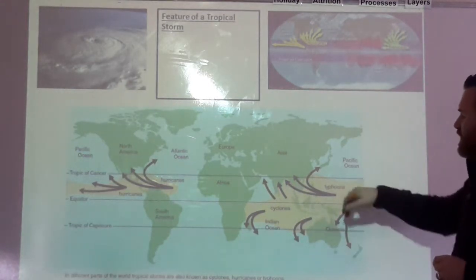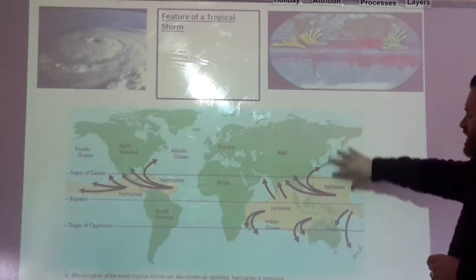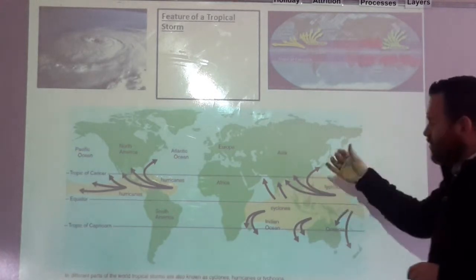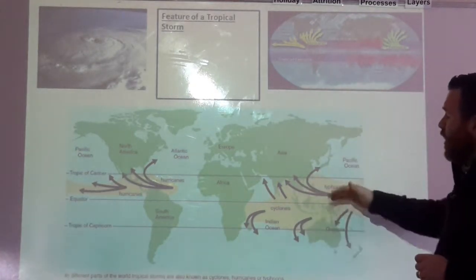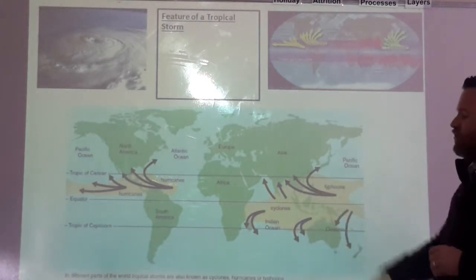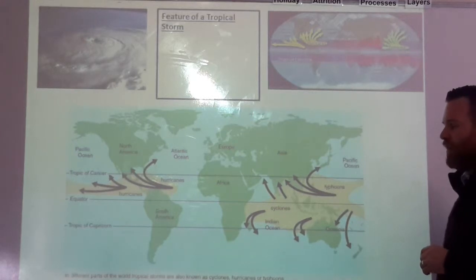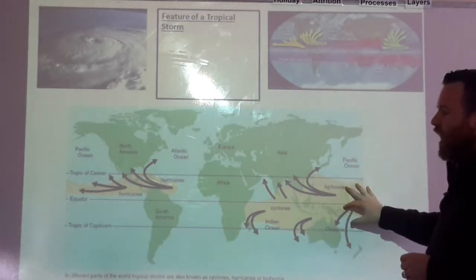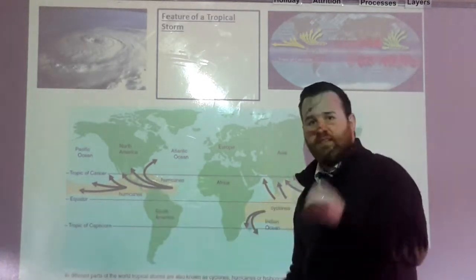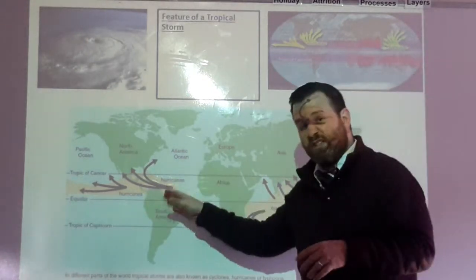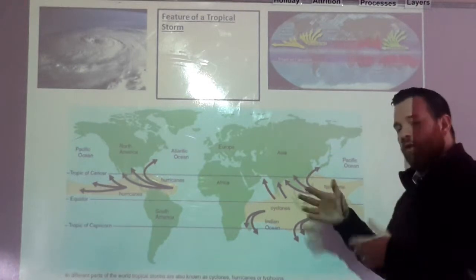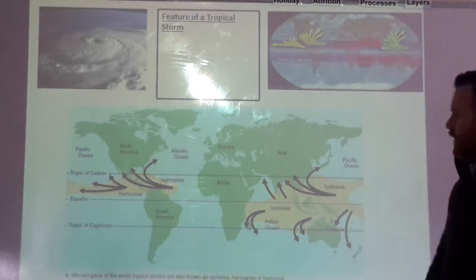And finally, typhoons. Typhoons tend to start in the western Pacific Ocean and will push inwards towards the Philippines — Typhoon Haiyan — and then upwards towards Japan, into southeastern Asia, and down towards northern Australia. If you get a question about describing the pattern, talk about the areas and give place detail: give the names of the oceans, the seas, and the countries where they're likely to be hitting.